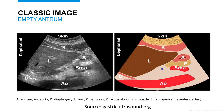Now that we have verified we're at the antrum, we can assess the appearance of the gastric antrum. Gastric ultrasound is first based off of qualitative assessment, so we're going to work on developing pattern recognition. Here we have an empty antrum — it is small, collapsed, and has the appearance of a bullseye. The bullseye pattern comes from the five alternating layers of the gastric wall.